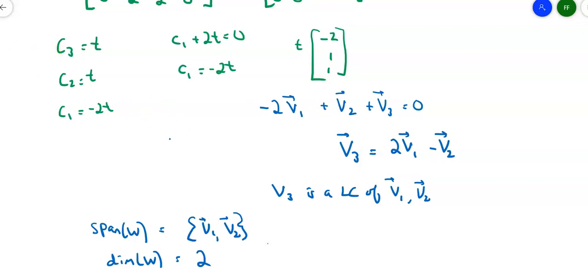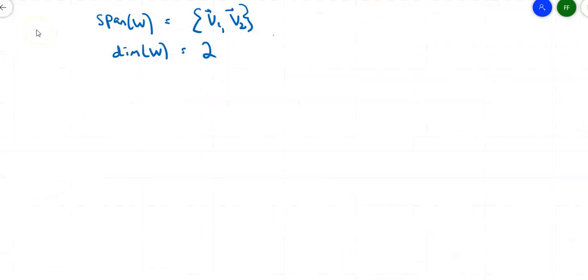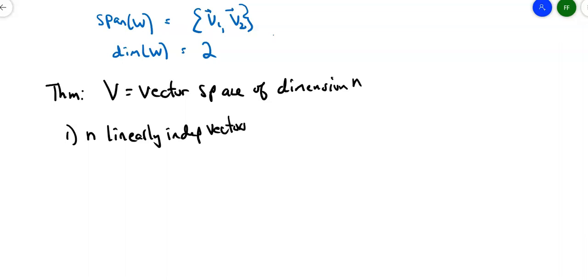This leads us to the last theorem in this section. If you have a vector space of dimension n, this is a little theorem. Again, you can read the whole thing in the book, but this is like the short version. So let's say you've got V as a vector space of dimension n, then if you've got n linearly independent vectors, means that S is a basis. And if the vectors span V, if they span the vector space, then S is a basis.